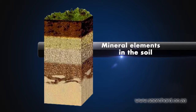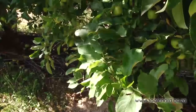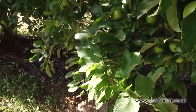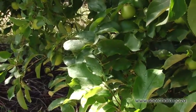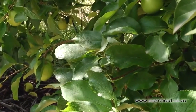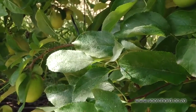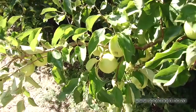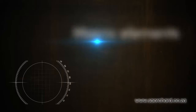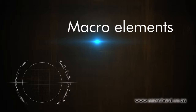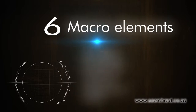There are many mineral elements in the soil. We're going to concentrate on 12 of them, the ones that are most used by the plant. Elements are divided into two groups: those which the plant uses a lot and those that the plant uses just a little of. The minerals that the plant uses a lot are known as the macro elements. There are six macro elements: nitrogen, phosphate, potassium, calcium, magnesium, and sulfur.